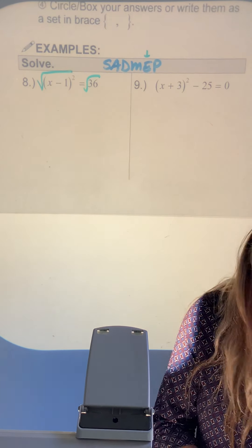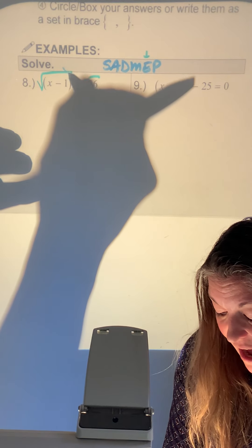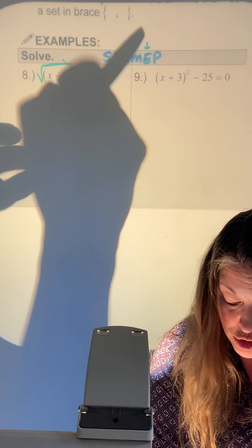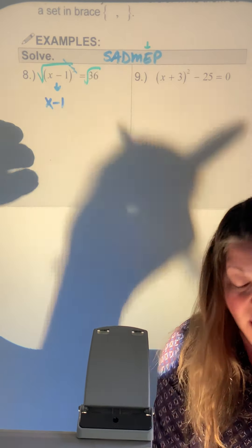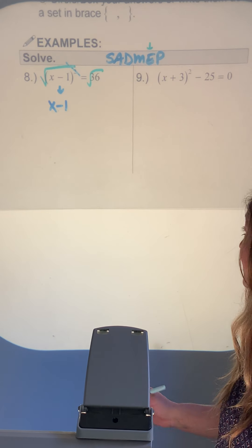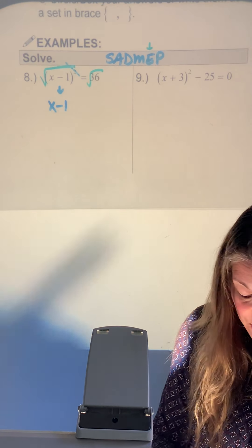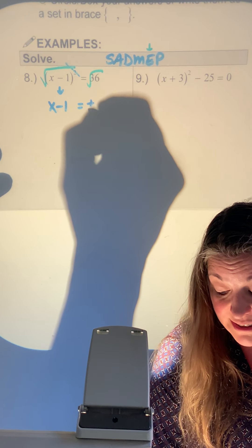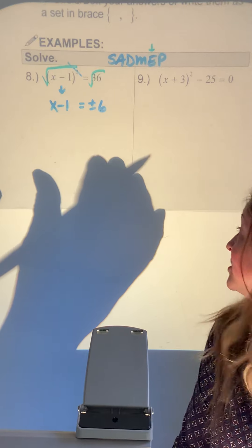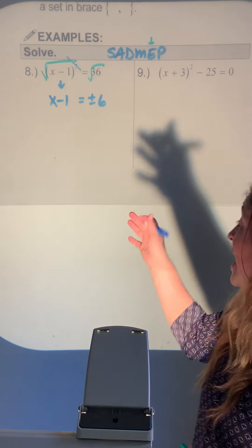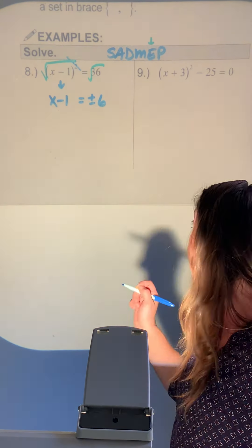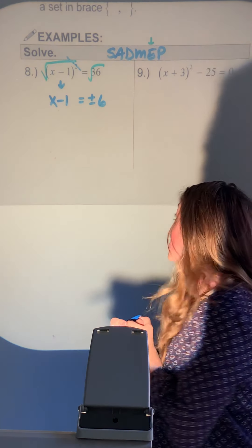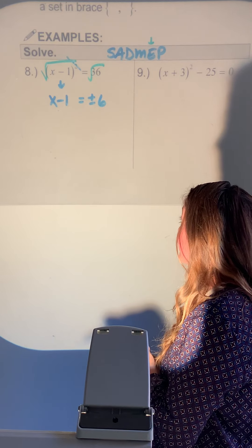Square rooting completely knocks out the exponent of 2 and drops x minus 1 out of the parentheses, with nothing around it. On the right side, the square root of 36 gives 6 — but don't forget the plus or minus, because there are actually two numbers that give 36 when multiplied by themselves.